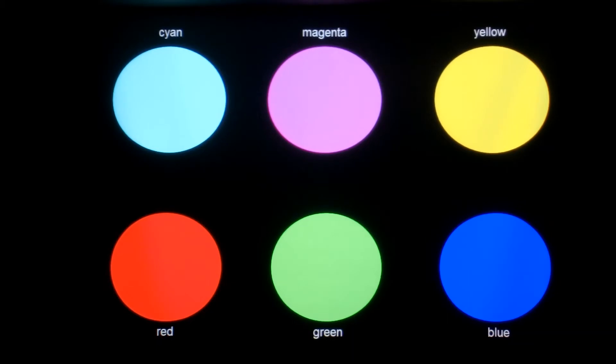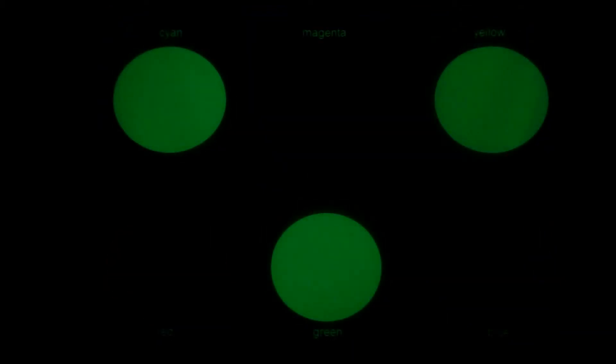A green filter allows green to pass through but blocks out red and blue. So when we put it in front of the camera, the cyan, the green, and the yellow appear green, but the red, the magenta, and the blue go black.